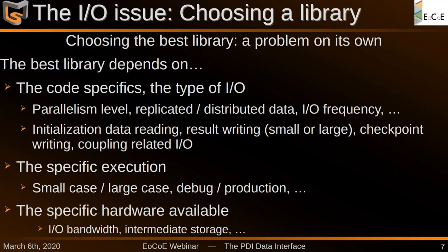In a single code, there are different reasons why you do IO — is it for initializing the data, writing results, writing checkpoints, or coupling with another application? Depending on all these parameters, the best library might differ. There is also the question of the specific execution: is it a small debug case or large production? And depending on the IO bandwidth provided by your hardware and the availability of intermediate storage, the best library might not always be the same.